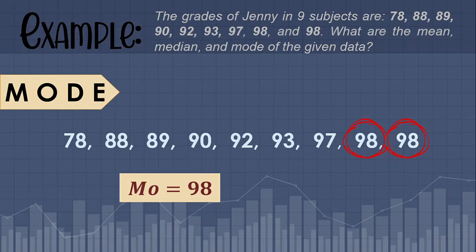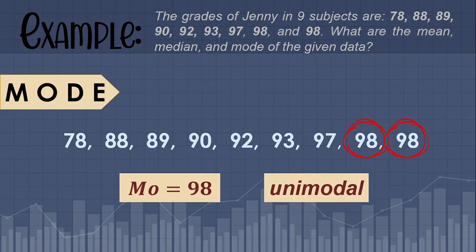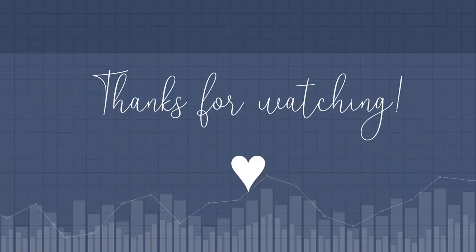Since 98 appears twice and the rest of the values appear only once, our mode is equal to 98. We only have one mode, therefore this set of data is considered unimodal. That is how you find the mode of a given set of data. That's all for the measures of central tendency of ungrouped data — thank you for watching.